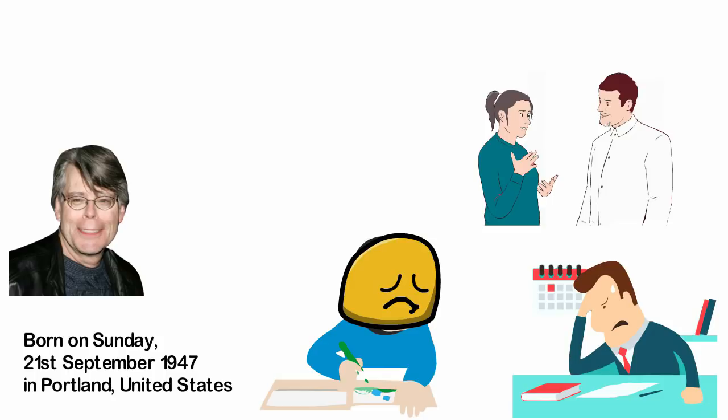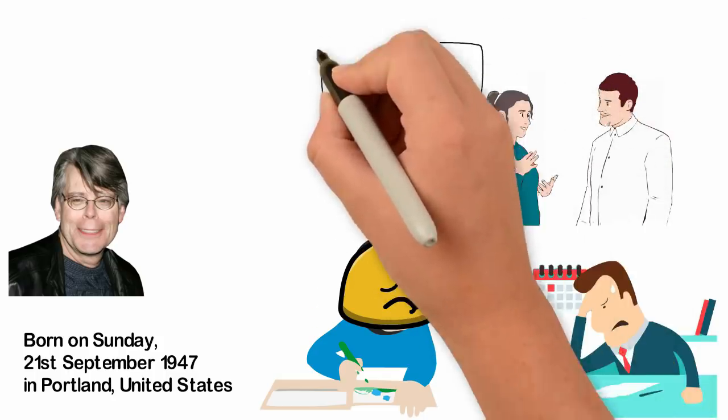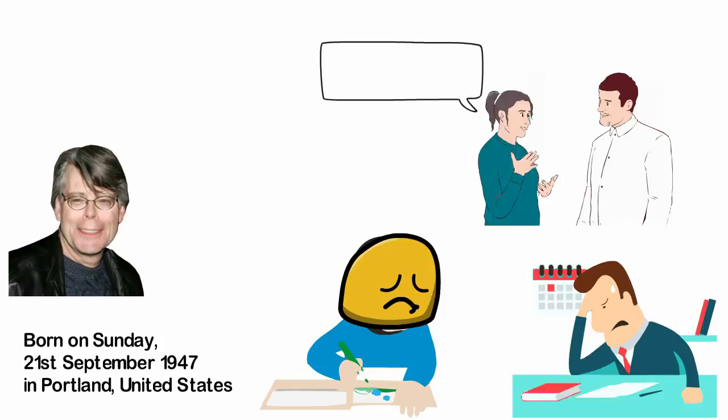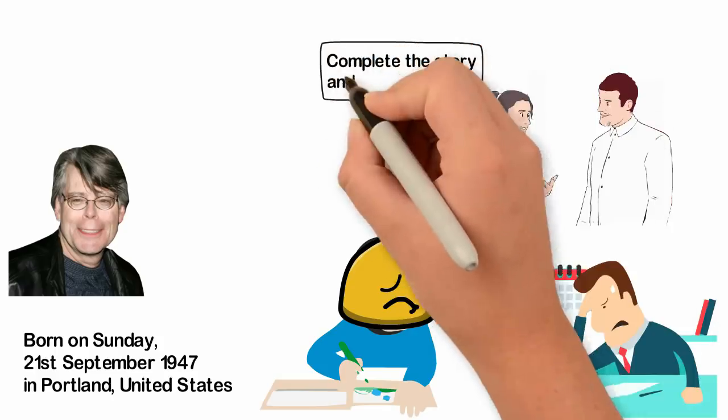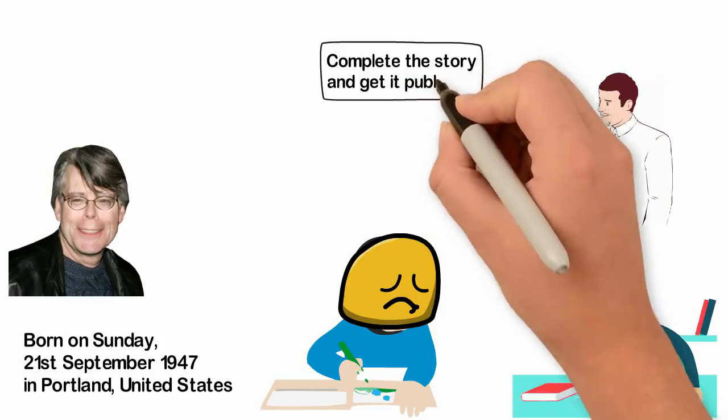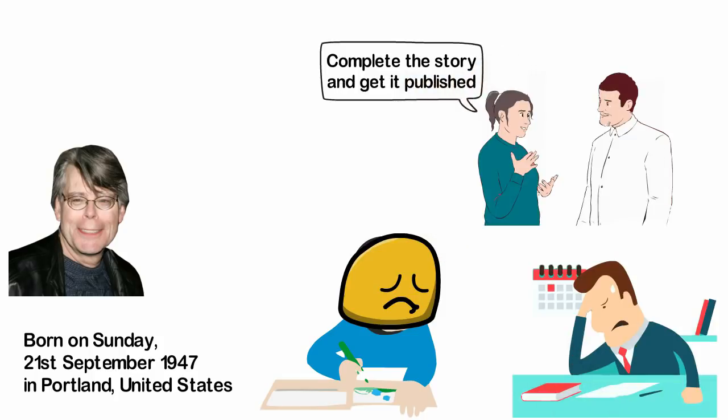Stephen King trashed the short story he had just written and went out to his day job, but his wife Tabitha had a better idea. She believes there's no harm in trying and she convinced her husband to complete the story of Carietta and get it published.